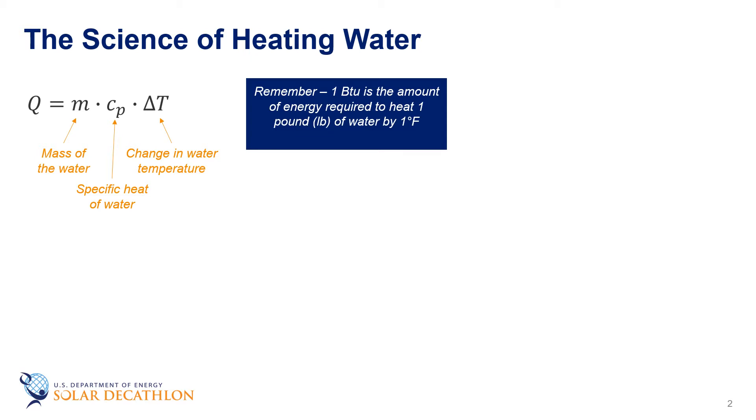The relationship of the heat to the mass and the temperature difference is the specific heat by definition. For water, the specific heat is one BTU per pound degree Fahrenheit.